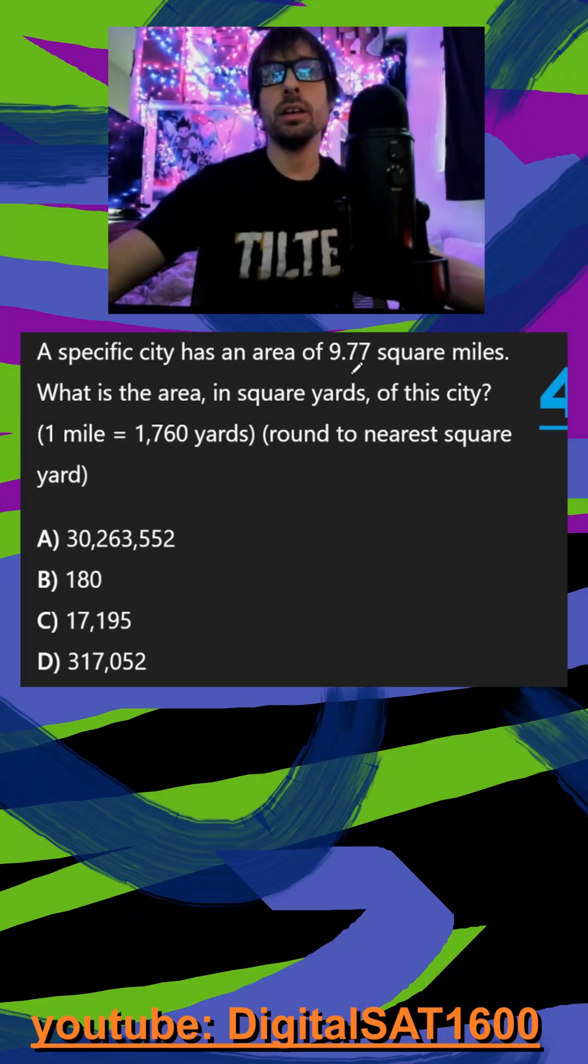A specific city has an area of 9.77 square miles. What is the area in square yards of the city? And they give us our conversion.